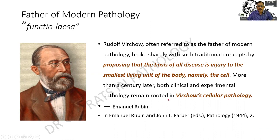This gentleman was the father of modern pathology. And this is the description of the event given by Rubin — Rubin is one of the famous books in pathology. What happens is there is an injury; it can be the smallest one, namely within the cell, and that forms the basis for disease. These were the words of Rudolf Virchow, the father of pathology.